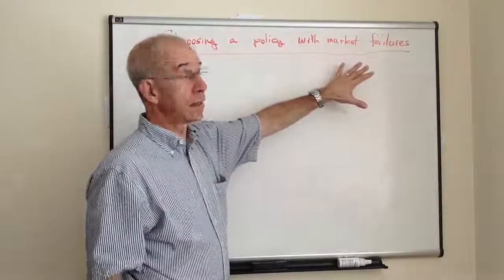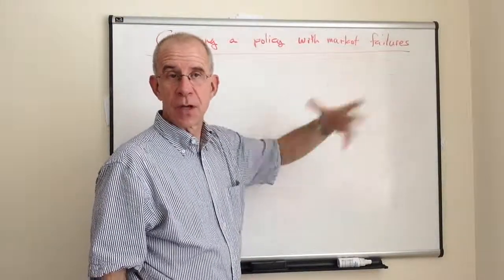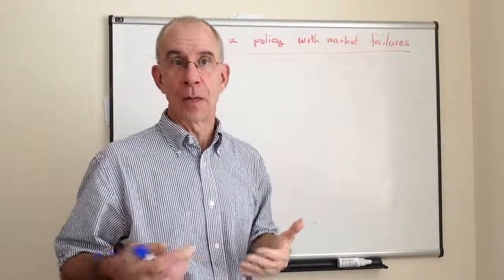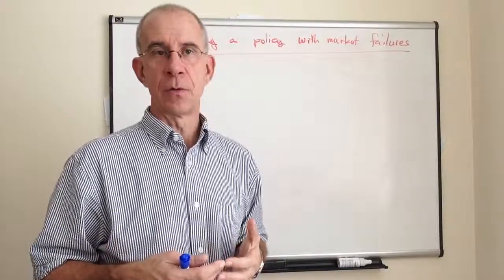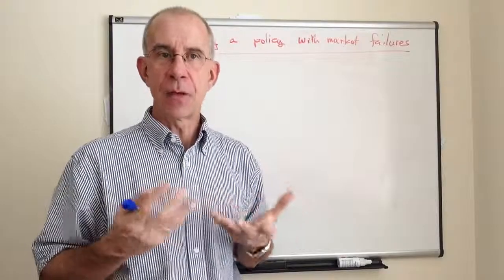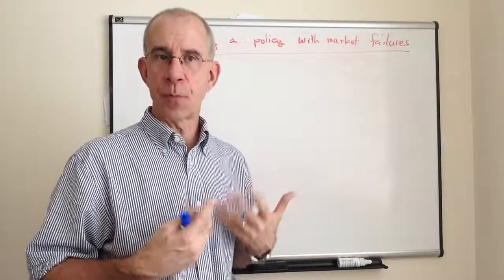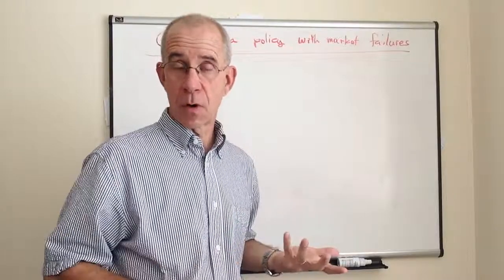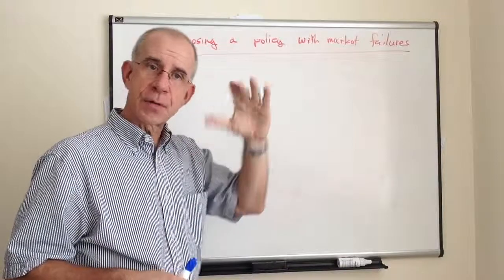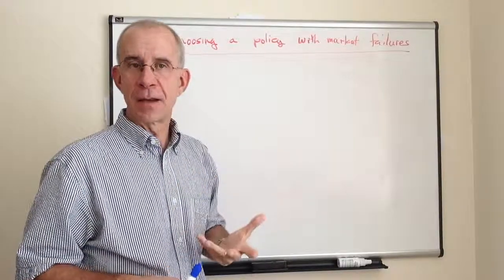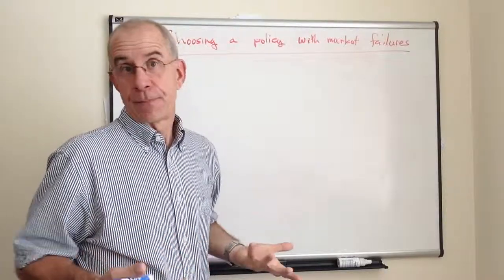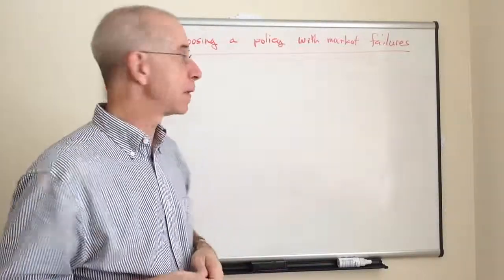So in the event that there are market failures, one of the things that governments need to do is to try and figure out what to do about it. We've got a lot of different things that we could potentially do. What is a framework to think about how to identify a proper solution to some sort of market failure? What I want to do in this video is to go through conceptually the steps that a policy maker may use in order to identify what to do about these problems.